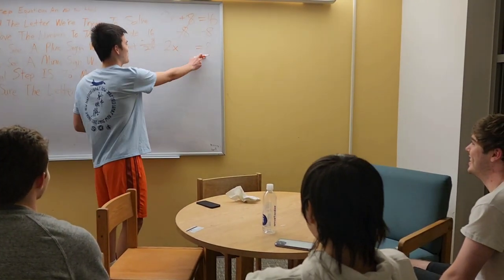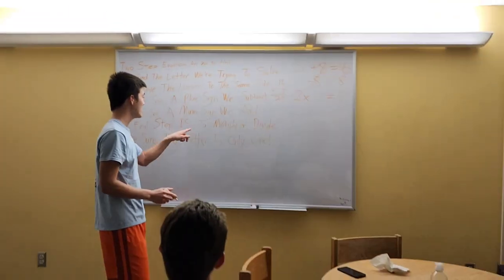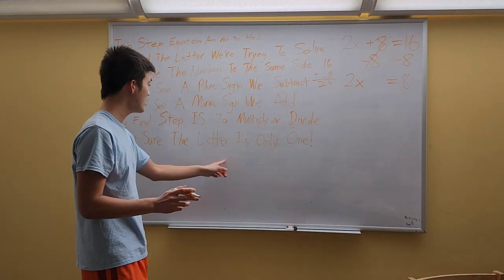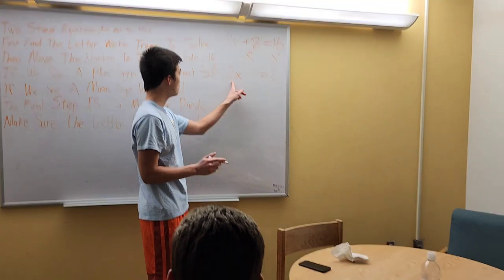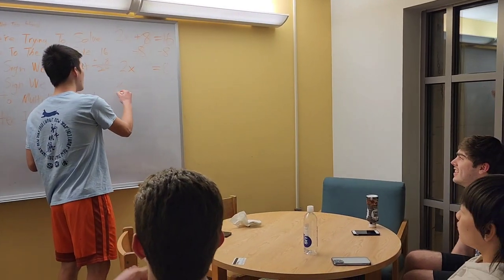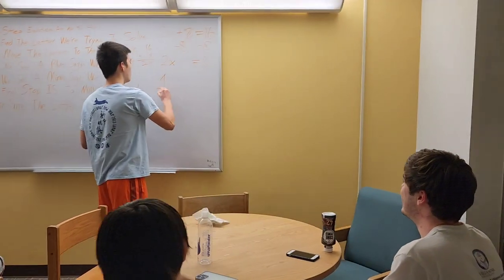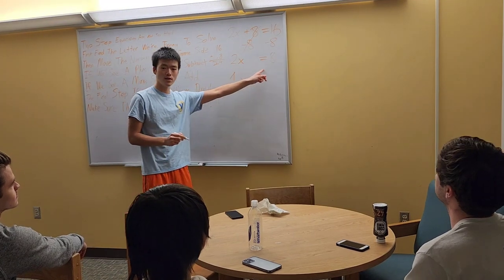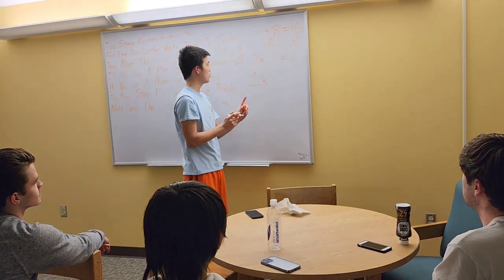Okay. So now we're just left with 2x equals 8. So right here, the final step is to multiply or divide. But we need to make sure the letter is only 1. So if we have the 2 here, but we want to make it 1. If we want to make it 1x, what we need to do is divide everything by 2. So 2 divided by 2 is 1.